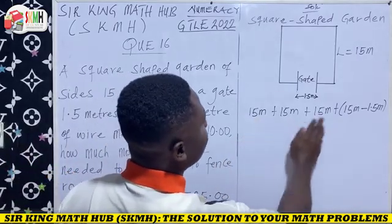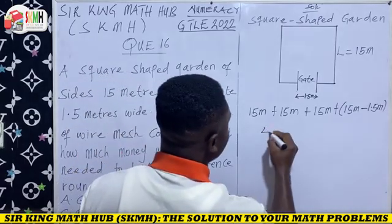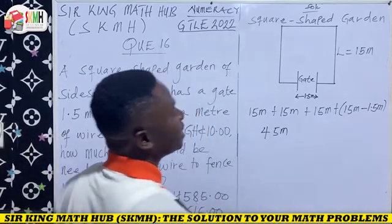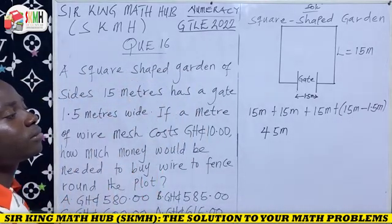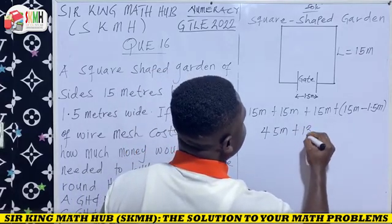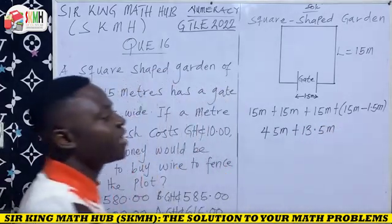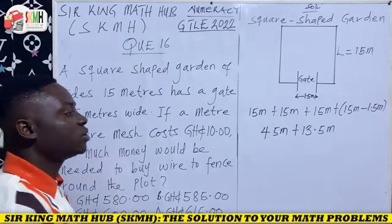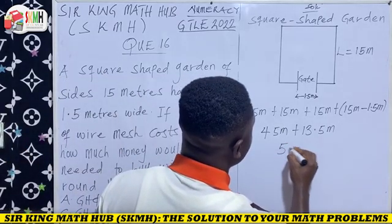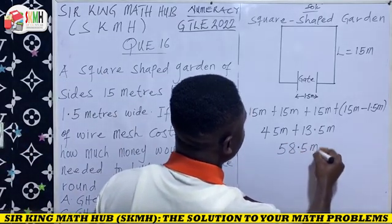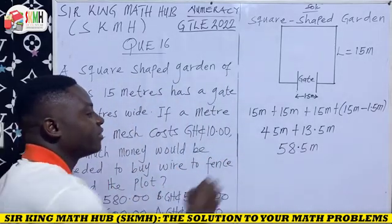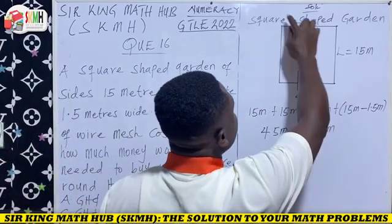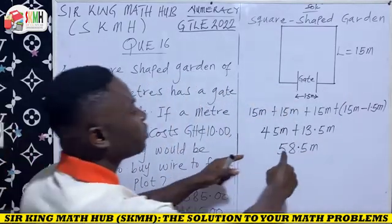So we have 15 meters plus 15 meters plus 15 meters plus 15 meters, which gives us 45 meters. Then 15 meters minus 1.5 meters gives us 13.5 meters. Finally, 45 meters plus 13.5 meters gives us 58.5 meters. This 58.5 meters represents the total length of wire mesh needed to fence around our square-shaped garden — that is the length of wire mesh we have to buy.